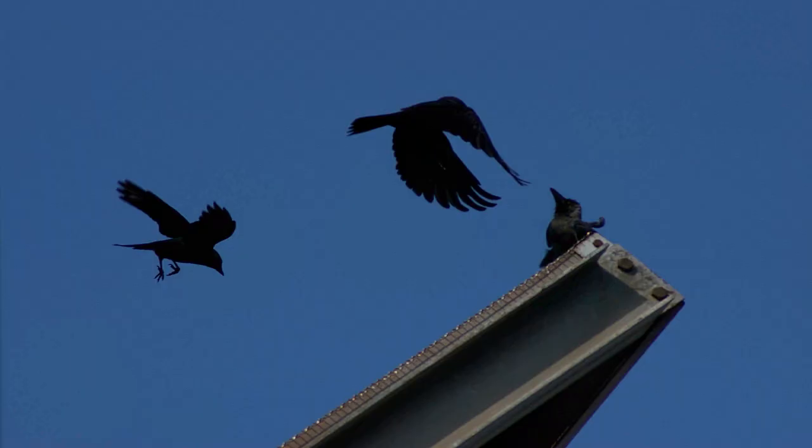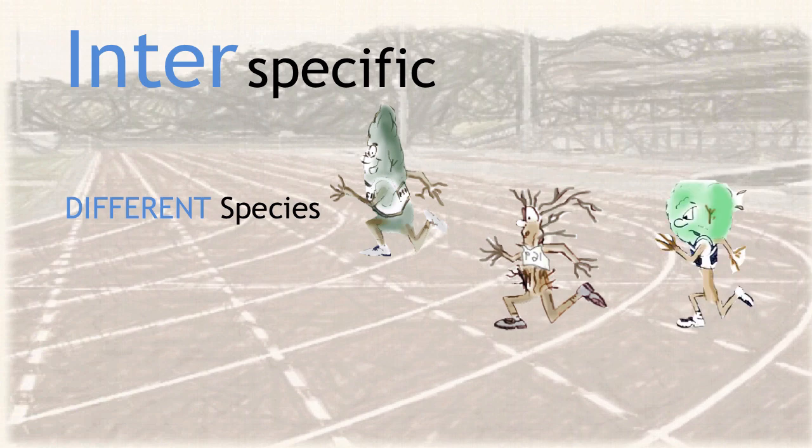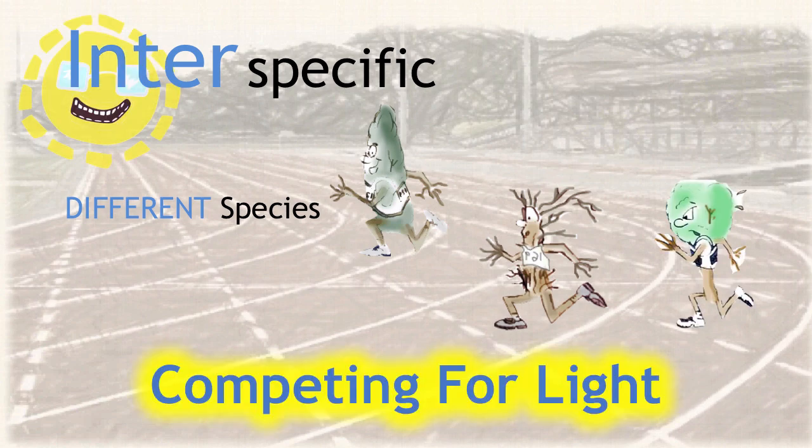On the other hand, inter-specific interactions are the effects that individuals of different species have on one another. For example, inter-specific competition may involve different species of plants and trees competing for light.